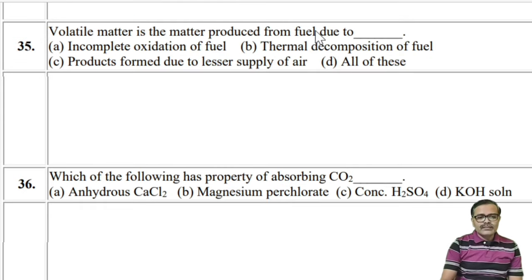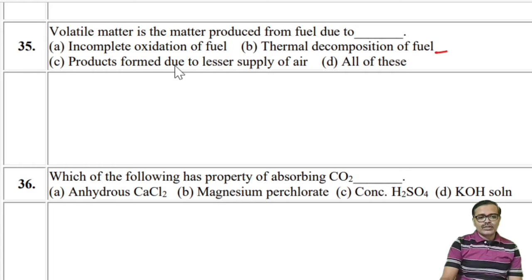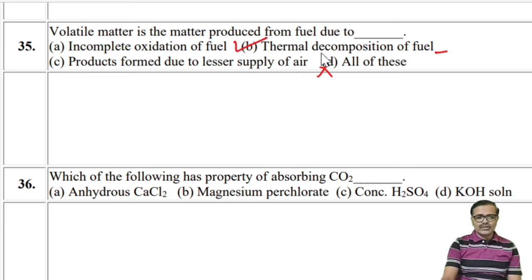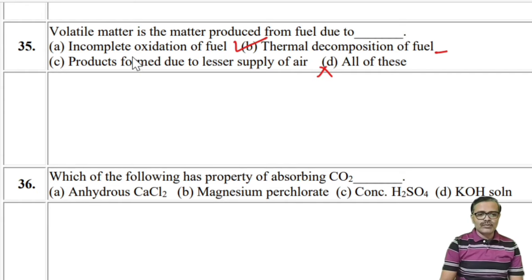Volatile matter is the matter produced from fuel due to thermal decomposition of fuel — not incomplete oxidation, not lesser supply of air. Due to thermal decomposition of fuel, volatile matter is formed. So the answer is the second option.